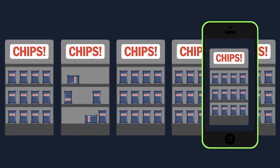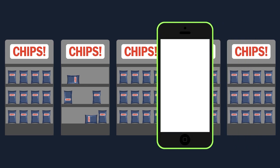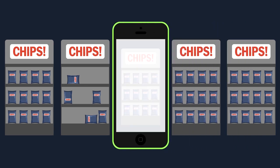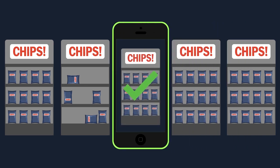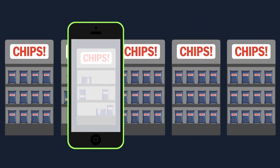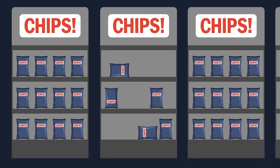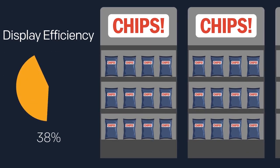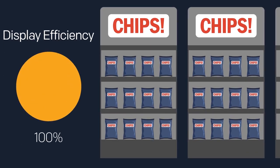With Retail Snapshot, you have the ability to pinpoint compliance issues within 24 to 48 hours of your major promotional displays at a key retailer during a major drive period, so you can make in-cycle corrections.